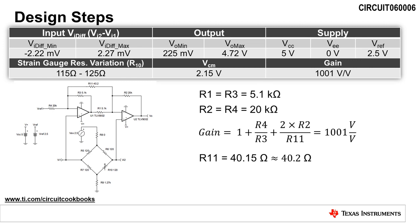We can now calculate the required resistor value for R11 to set the gain of the instrumentation amplifier to 1,001 volts per volt. The gain of the instrumentation amplifier is equal to 1 plus R4 divided by R3 plus 2 times R2 divided by R11.